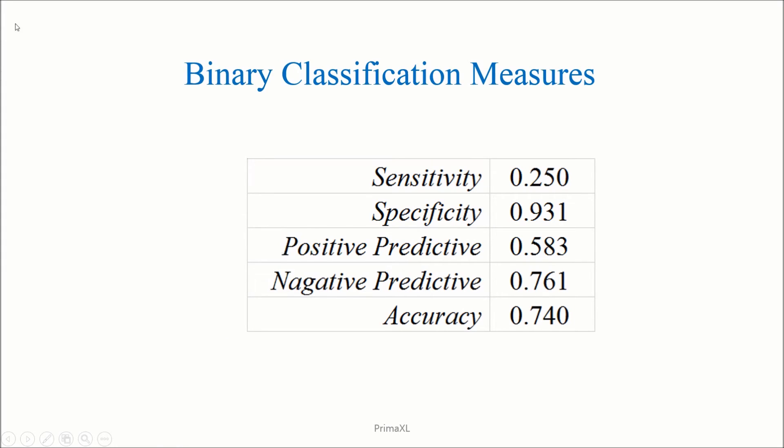Then, these are the relevant measures for the binary classification. We have the sensitivity, which is calculated as true positive divided by the sum of the true positive and false negative. As we can see here. We have the specificity, which is given by this formula. Positive predictive rate. Negative predictive rate.